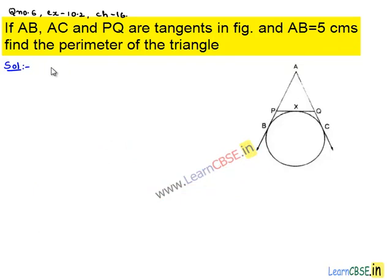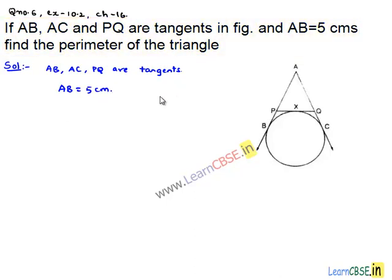Coming to the solution, the given information is that AB, AC, and PQ are tangents to the given circle, and the length of tangent AB is given as 5 centimeters. We need to find the perimeter of the triangle.